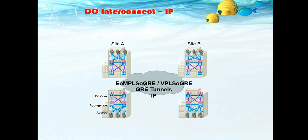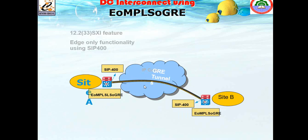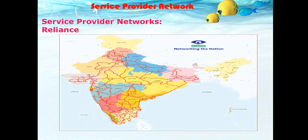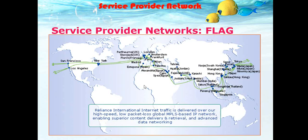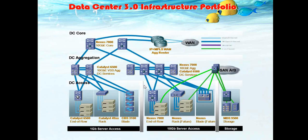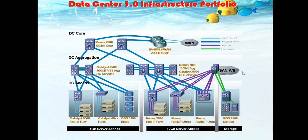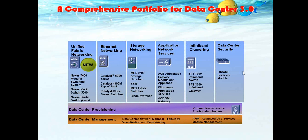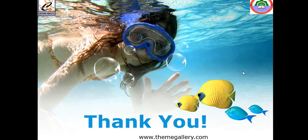For the IP option, sites A, B, and C connect through an internet service provider network with various service providers. This is the third-generation data center structure, featuring 1 Gb server access, 10 Gb server access, storage, various servers, core routers, aggregation switches, and access switches. This is the basic portfolio of data center version three. Thank you — if you have any queries, you can reach me via email.